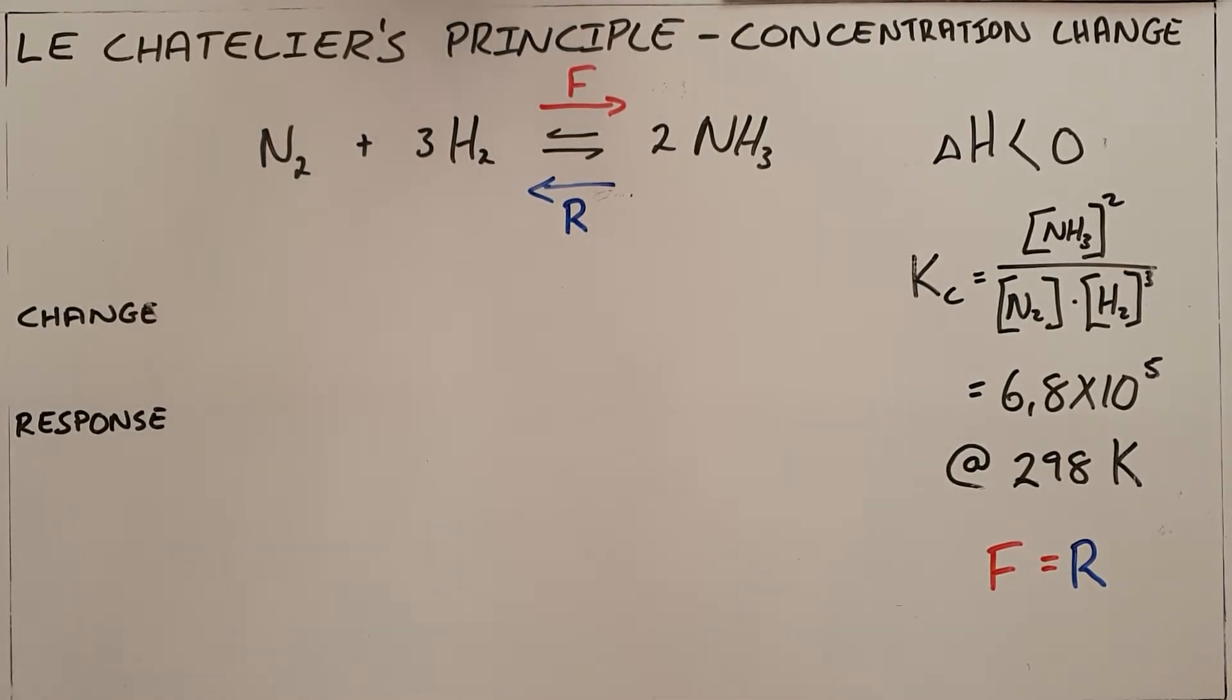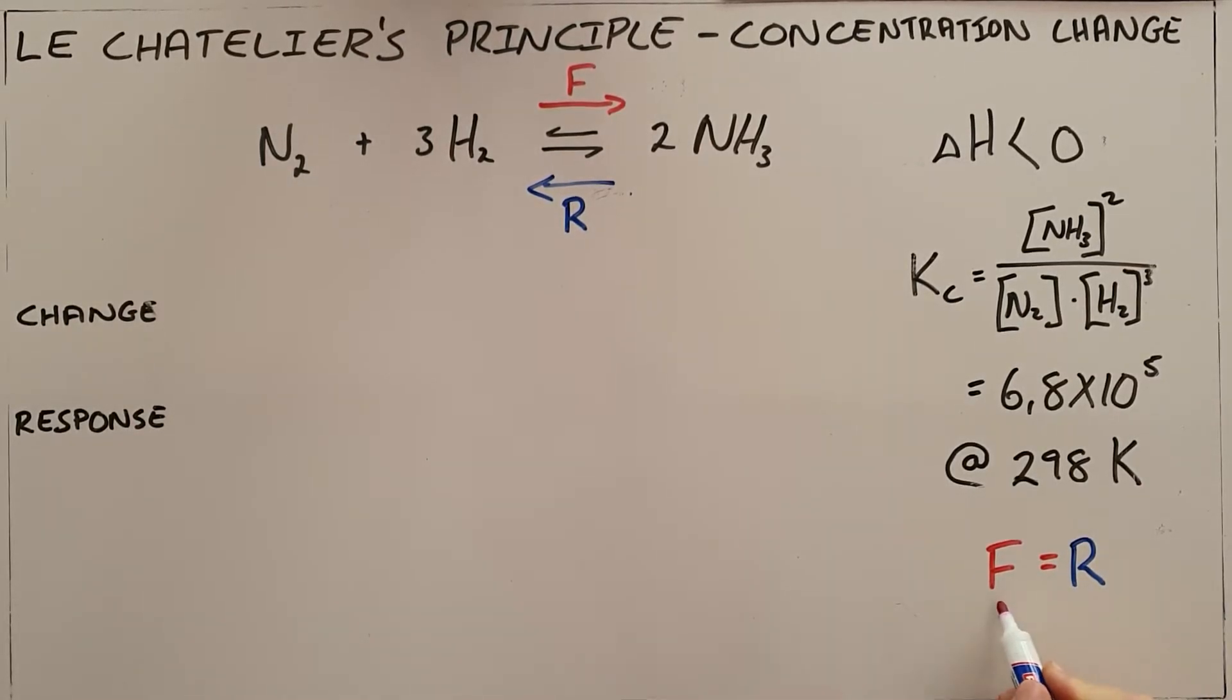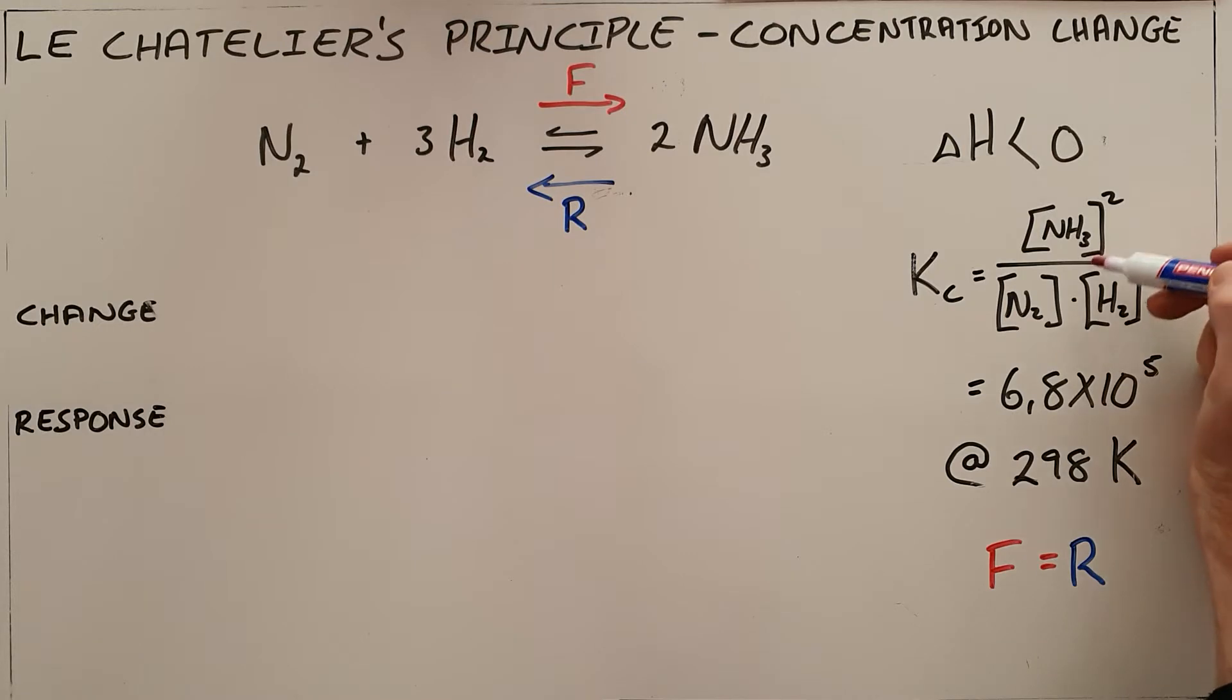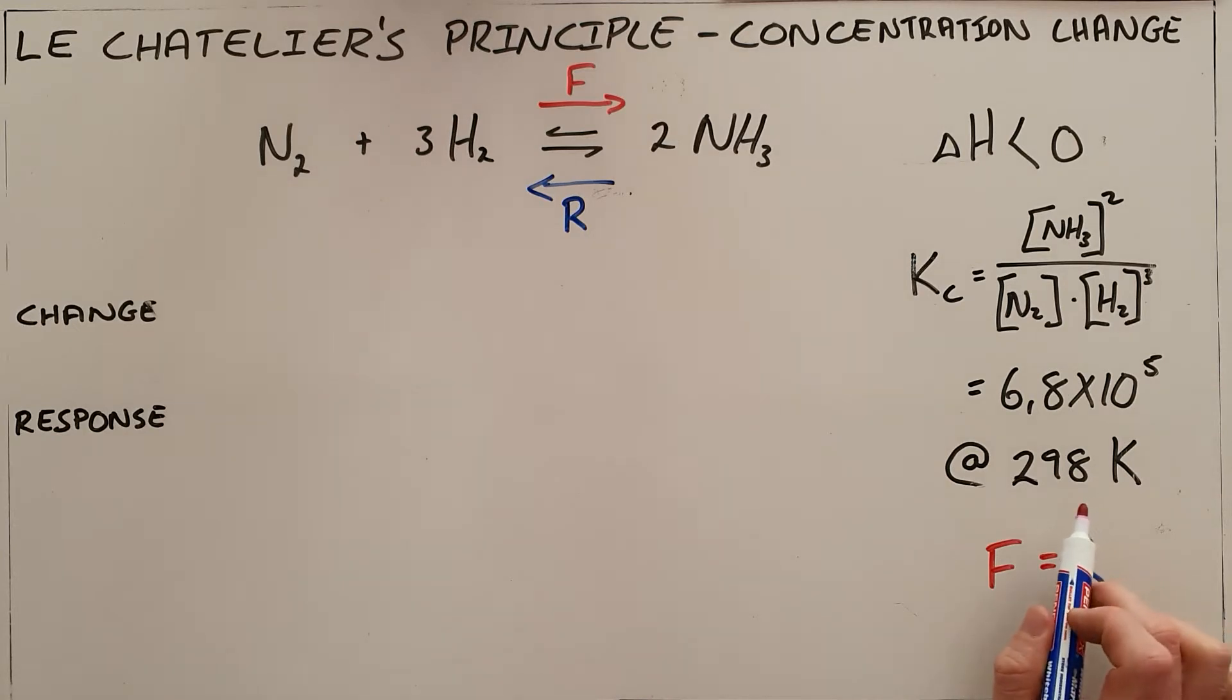Once equilibrium has been established, we know that the rate of the forward reaction is equal to the rate of the reverse reaction, and the ratio of the concentration of the products to the concentration of the reactants remains constant as long as the temperature remains constant. Now there are a number of changes that can be made to that reaction which would initially upset equilibrium.